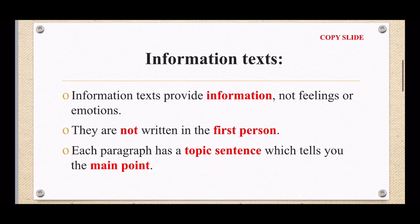Today we'll be looking at what an information text is. So they provide information and not feelings or emotions. So unlike stories or poems or advertisements they are very different because they only provide information. They are not written in the first person and each paragraph has a topic sentence and this topic sentence tells us the main point of the text.